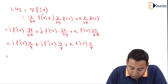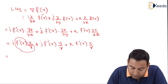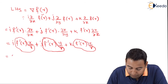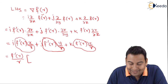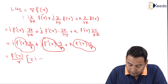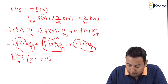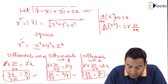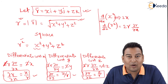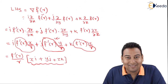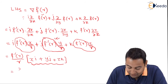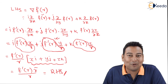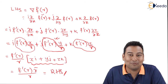Taking f'(r)/r common from all terms leaves (xi + yj + zk) inside, which is exactly r̄. Therefore ∇f(r) = f'(r)·r̄/r, which is the required RHS. We are done with the proof. Hope you understood — in the next videos we'll discuss similar proofs. Thank you.